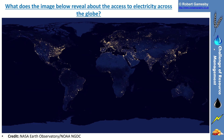Hello, and this is lesson two in Challenge of Resource Management. Here you can see a nice image from NASA of the Earth at night, all the electricity and light showing up from all our major cities and so on across the globe.